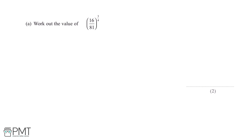Work out the value of 16 divided by 81 to the power of 3 over 4. The first thing we can do is rewrite this fraction as 16 over 81 to the power of a quarter, all cubed.